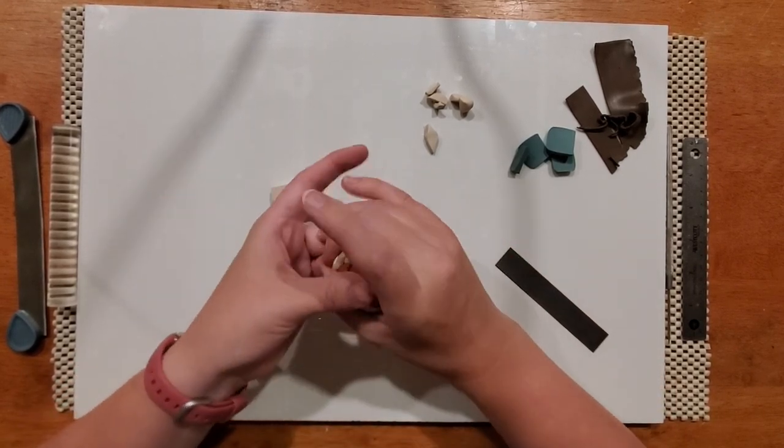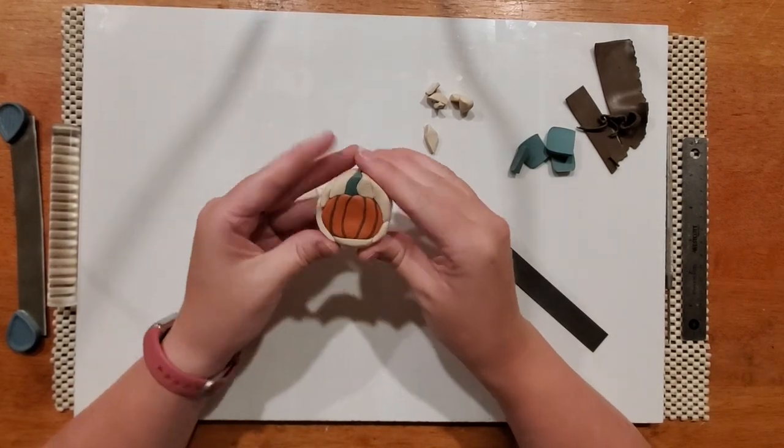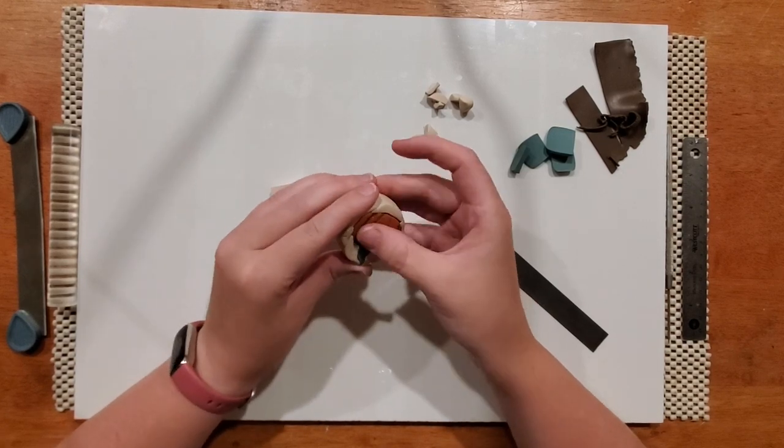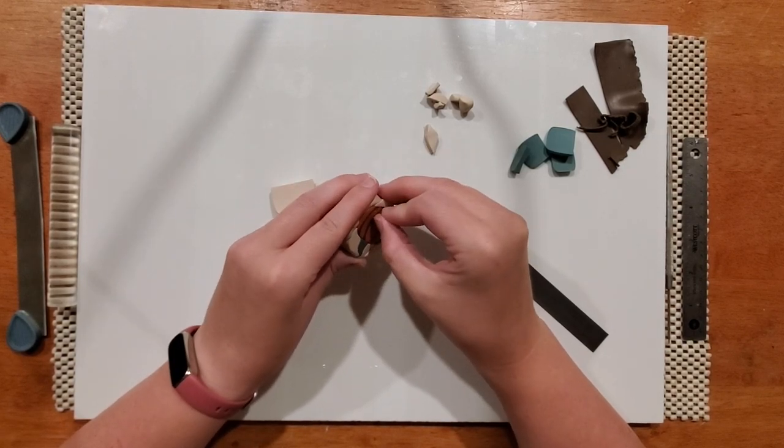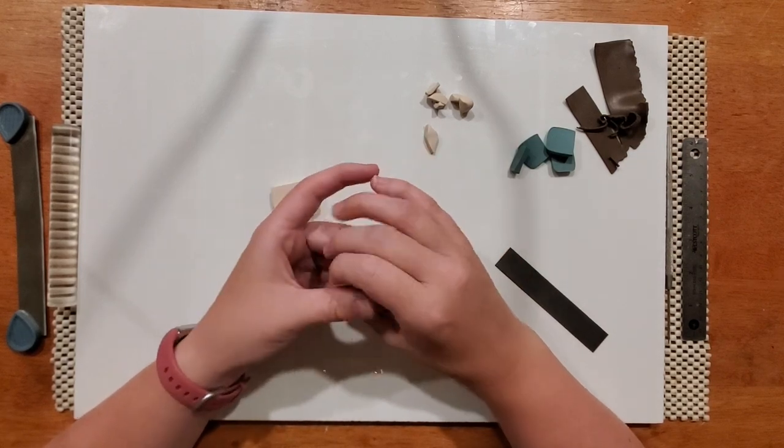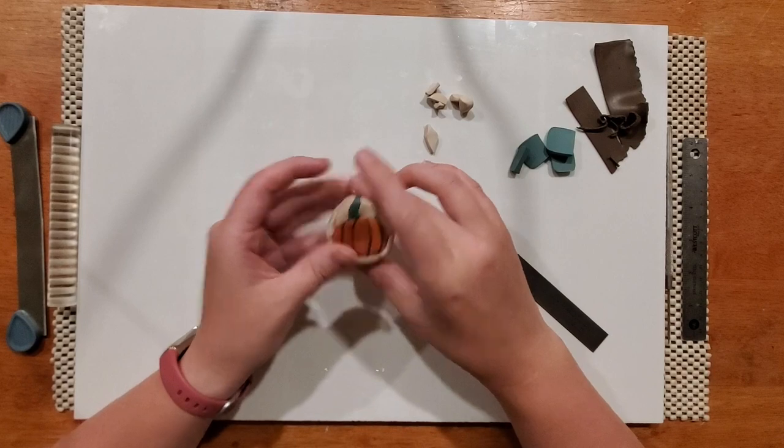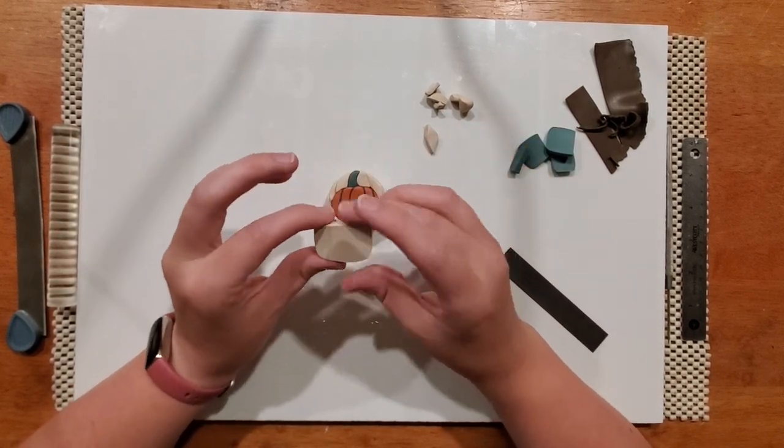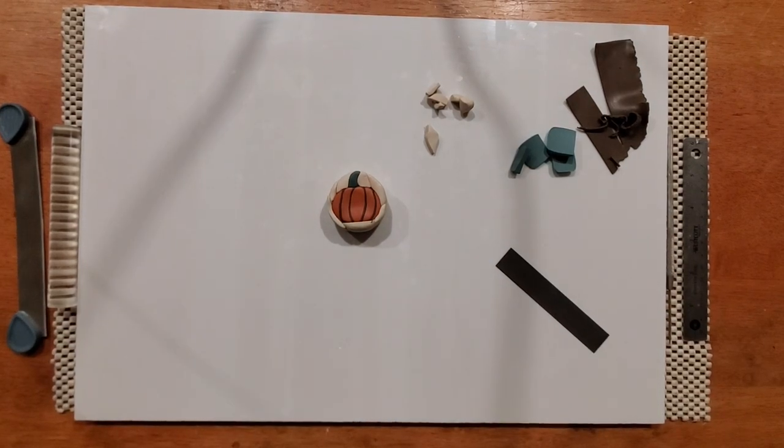Okay, so now I have it kind of filled in to a circle. What I like to do is I like to wrap the whole thing in a thin layer just to kind of keep it all cohesive on the outside. So I'm going to roll this out nice and thin and then I'll be back to wrap it.